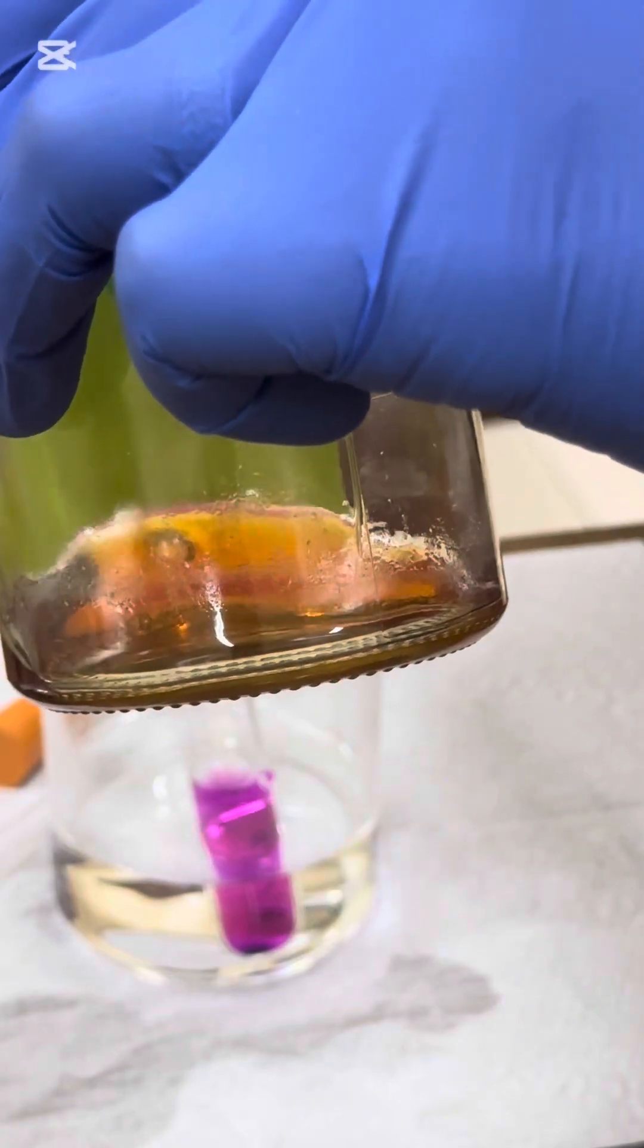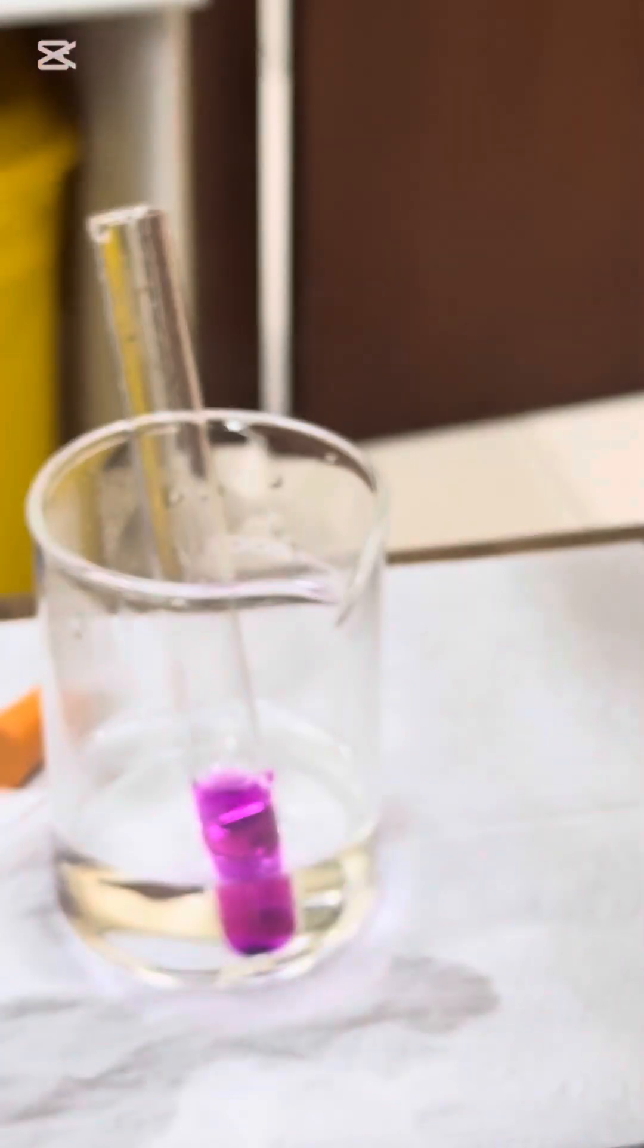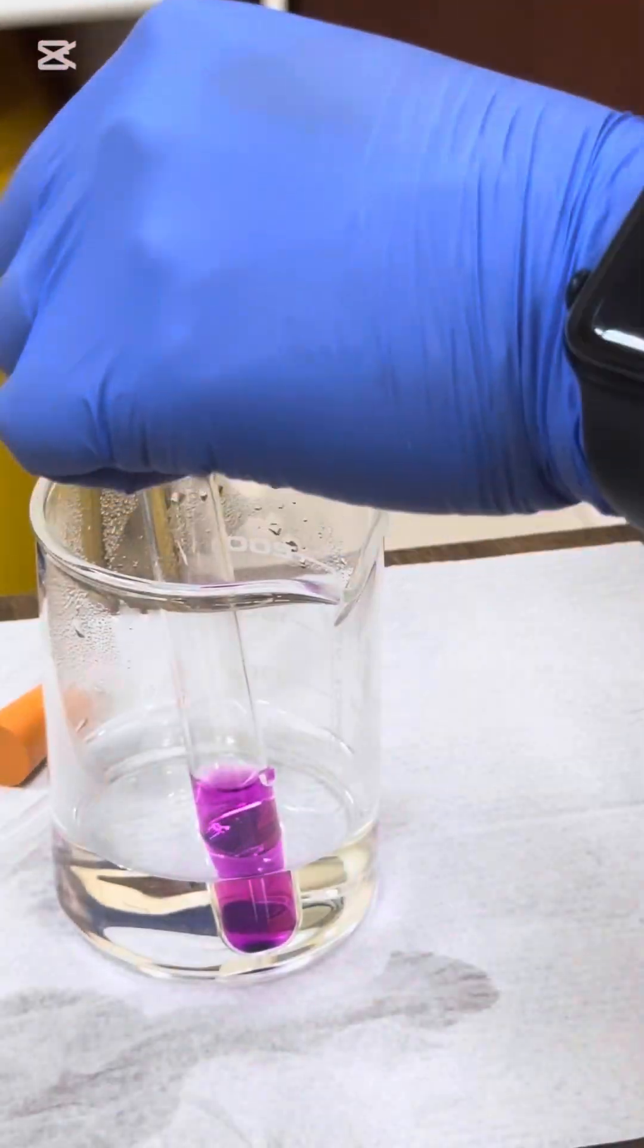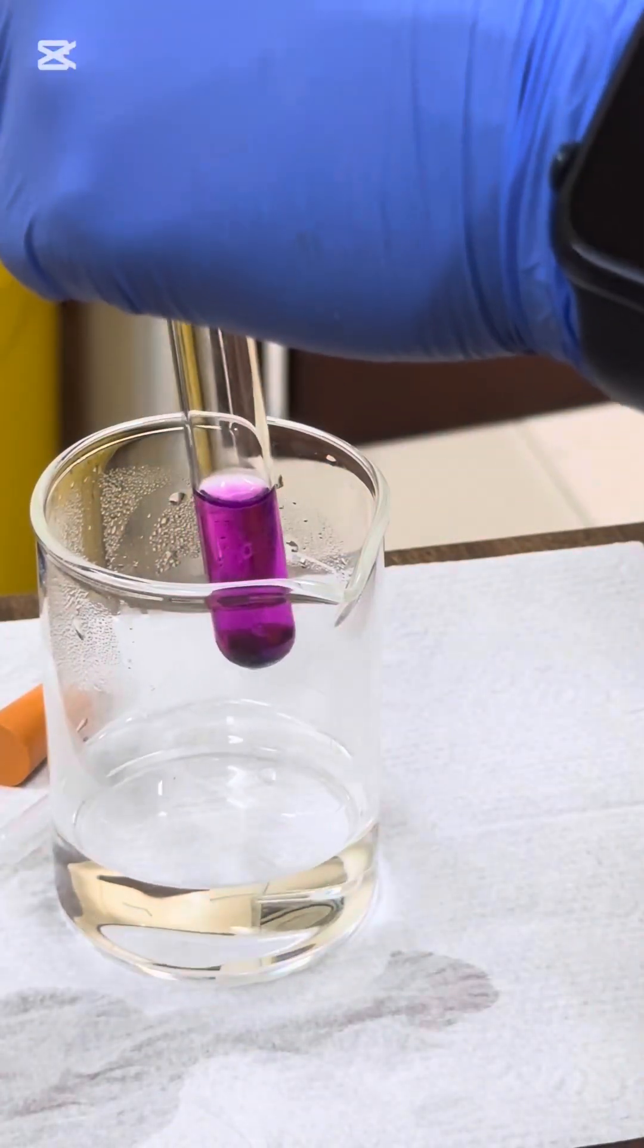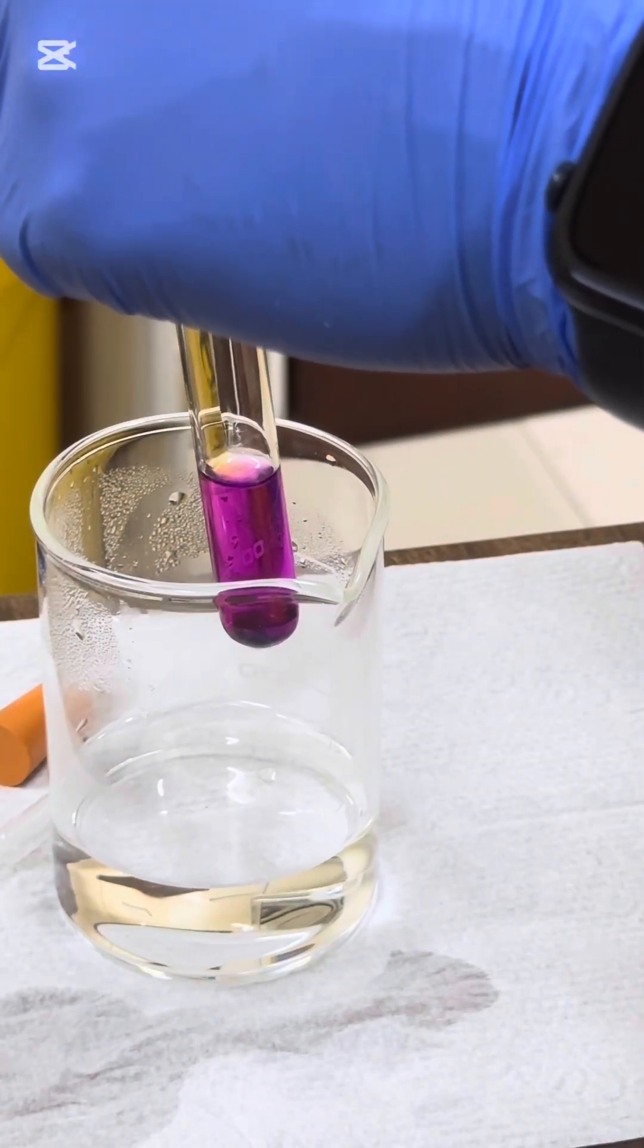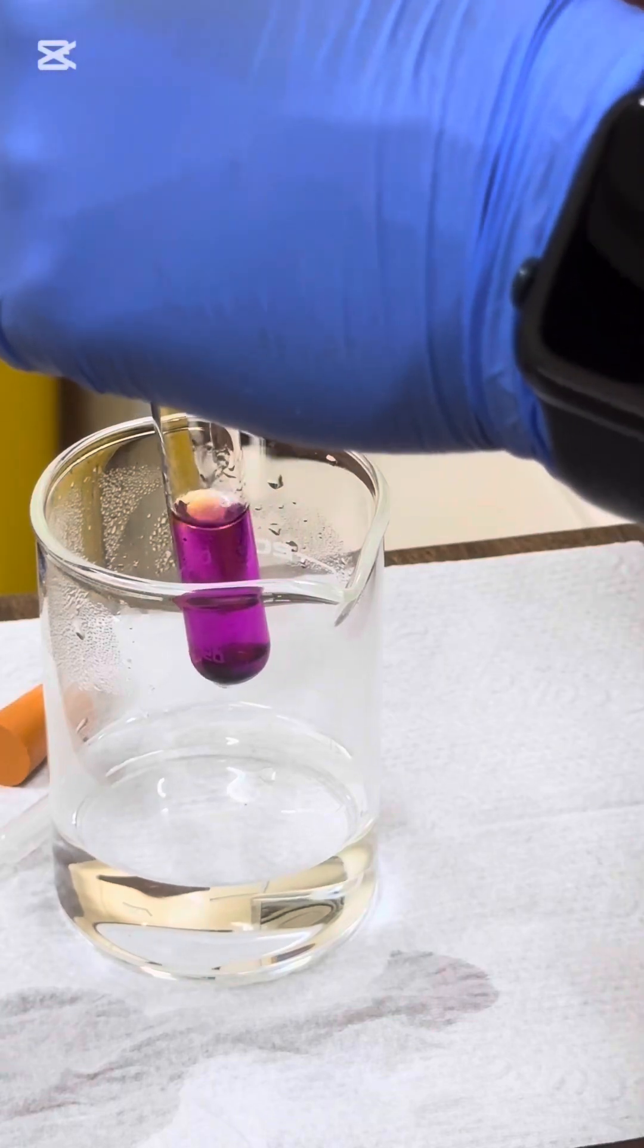You'll see it floating at the top and which part is the aqueous layer. So, I'm going to add my alkene to the potassium manganate 7. You can see it's just right at the top, not shaking it.